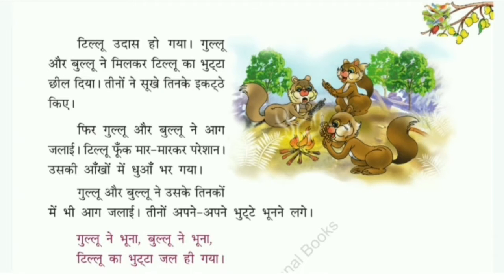Tillu udaas ho gaya — Tillu became very sad. Gullu aur Bullu ne milkar Tillu ka buthha chheel diya — Gullu and Bullu helped Tillu to peel the corn. Teeno ne sukhhe tinke ikhatte kiye — they collected dry straws. Tinke means straws, ikhatte means to collect. After that, Gullu aur Bullu ne aag jalai — Gullu and Bullu started to light the fire. Tillu phoonk maar maar kar pareshaan ho gaya — but Tillu continuously blew the fire and became tensed.